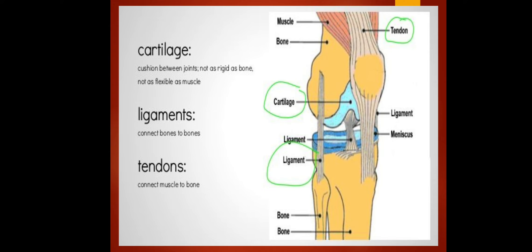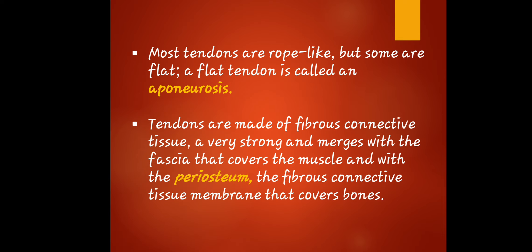Here are some of the key parts: cartilage, ligaments, and tendons. Tendons connect muscles to bones. Ligaments connect bones to bones. Cartilage is a cushion between joints — not as rigid as bone and not as flexible as muscle. Please take note of the location of cartilage, ligaments, and tendons as shown.